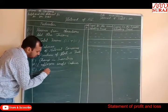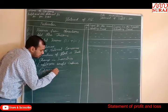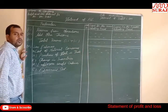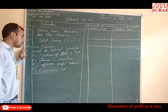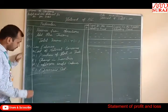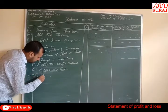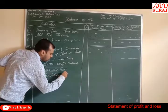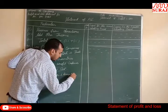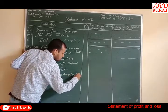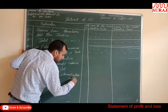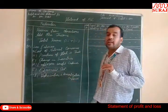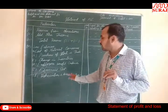Next, Financial Cost. Interest paid on any long-term borrowing, short-term borrowing, and other loans taken — all of these are included in Financial Cost. Then, Depreciation and Amortization Expenses: amortization of intangible assets and depreciation of tangible assets are included here.